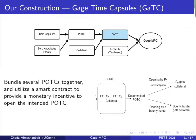In order to allow rewarding bounty hunters for the work they do in opening time capsules, we utilize a smart contract to build what we call Gauge Time Capsules, where we bundle several policies together and allow P0 to create a collateral on the blockchain through the smart contract that controls the Gauge Time Capsule. Not all these policies will be opened — only those that correspond to the private inputs of the parties. As shown in the figure, there will be two paths: the nominal path where P0 will come back and open the intended policies and recover her collateral, and the bounty hunting path where bounty hunters will do the work to open these time capsules and claim the collateral.